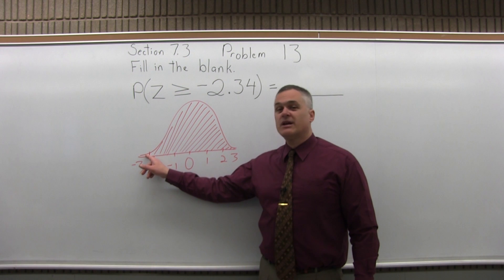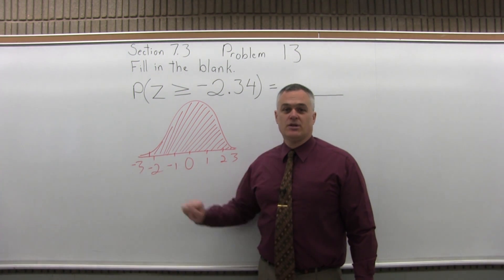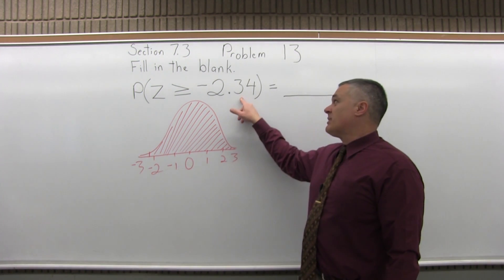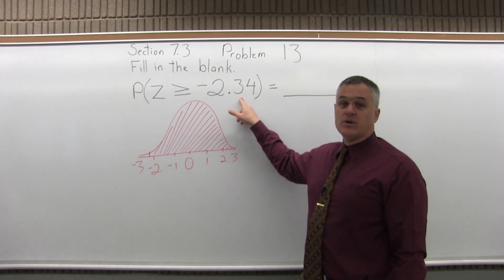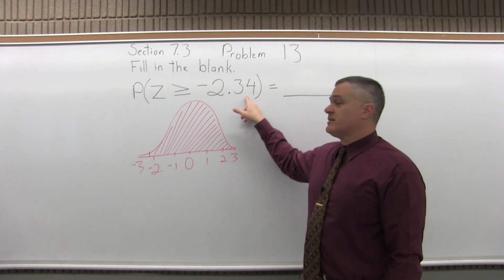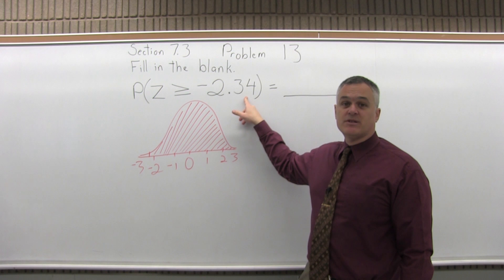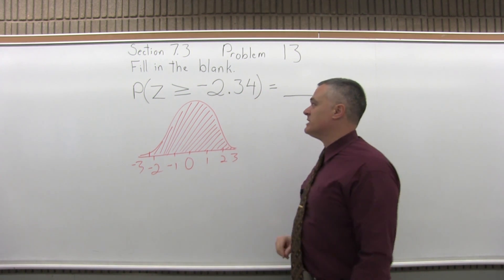So almost all of it except for that tiny little blank portion on the left. So what we have to do is start by looking up negative 2.34. To look it up, step 1: write the number to look up so that it has two places after the decimal, which it already has.